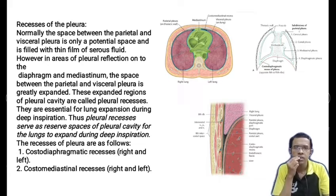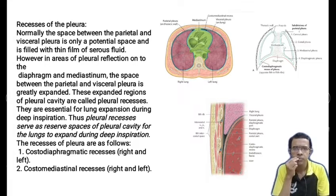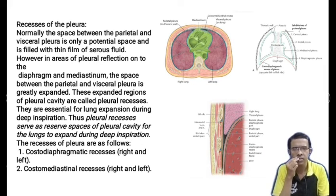Pleural recesses: normally the space between the parietal and visceral pleura is only a potential space filled with a thin film of serous fluid. However, in areas of pleural reflection onto the diaphragm and mediastinum, the space between parietal and visceral pleura is greatly expanded. These expanded regions are called pleural recesses. They serve as reserved spaces for lung expansion during deep inspiration. The recesses are: number one, the costodiaphragmatic recess (right and left); and number two, the costomediastinal recess (right and left).